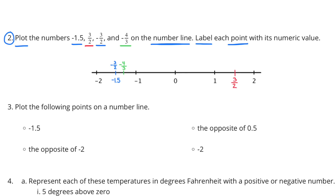Number 2. Plot the numbers negative 1 and 5 tenths, 3 halves, negative 3 halves, and negative 4 thirds on the number line. Label each point with its numeric value. Since negative 1 and 5 tenths has the same value as negative 3 halves, they have the same location on the number line.